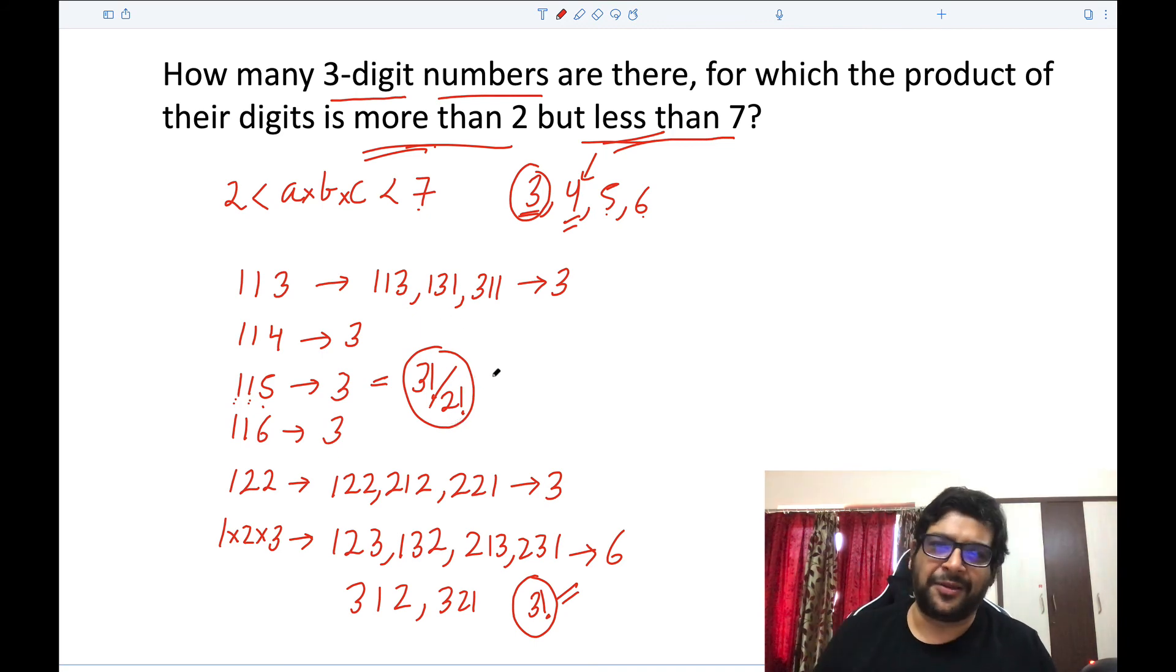So you can use any of these methods. Now how many total such numbers are there? Add it all up. So you have 3, 3, 3, 3, 3, five times—15 plus 6. So you have 21 such numbers in total, and that is why your answer here will be 21.